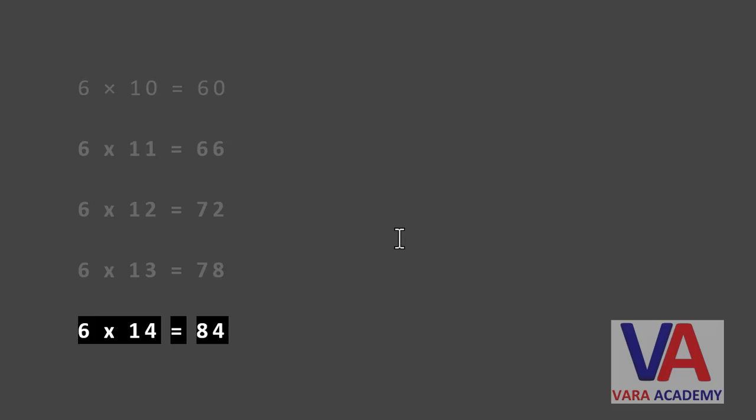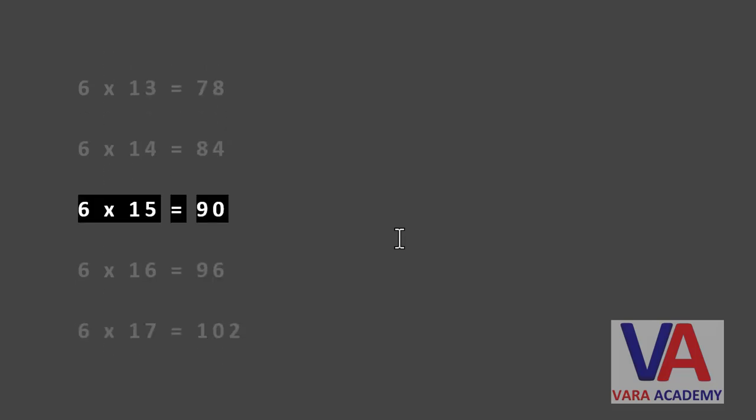Six times fourteen equals eighty four. Six times fifteen equals ninety.